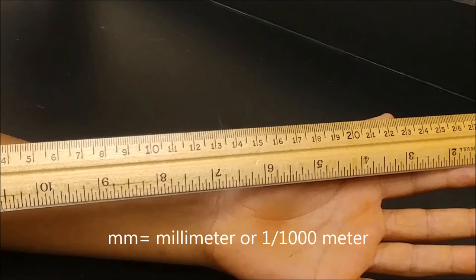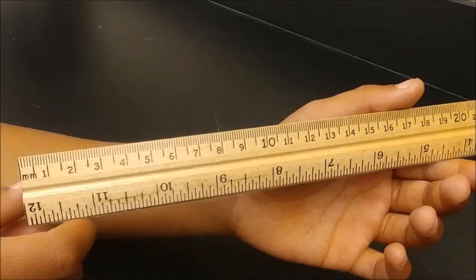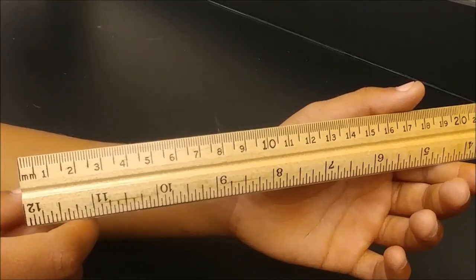Since MM is one of the smaller units, we need to look for the smaller lines. You can see that there are over 30 centimeters in a foot.